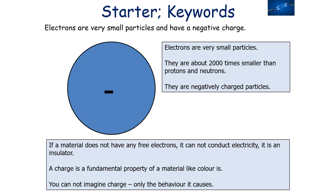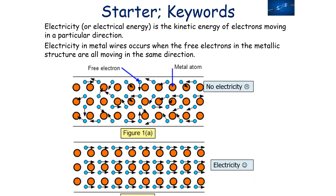Electrons are small particles and have a negative charge. They're about 2,000 times smaller than protons and neutrons, and they're negatively charged. If a material does not have any free electrons, it can't conduct electricity, so we call it an insulator. Now charge is a fundamental property of a material, like colour is. You can't actually imagine and visualise charge, only the behaviour that it causes. Electricity, or electrical energy, is the kinetic energy of electrons moving in a particular direction.